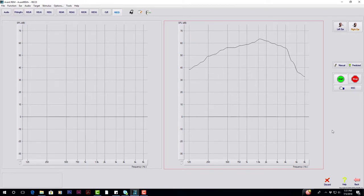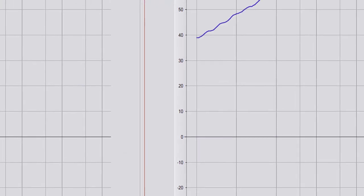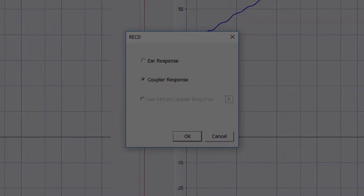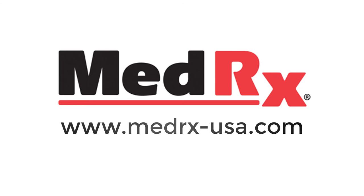Once the ear measurement is complete, you will be prompted to perform a coupler response measurement. Select the ear adjustment to use the wand-through method and select the appropriate instrument receiver.